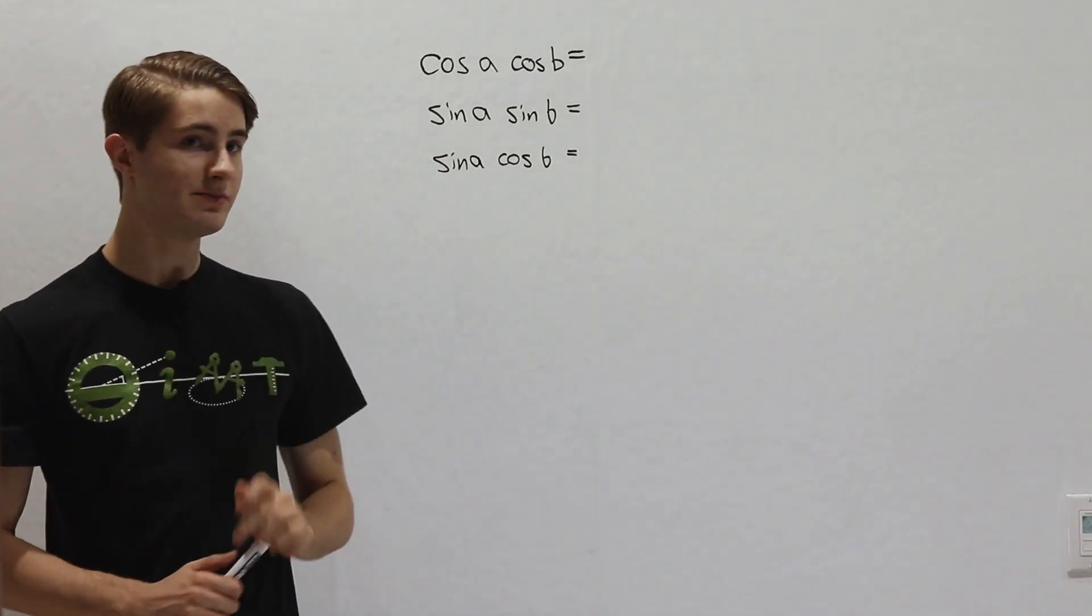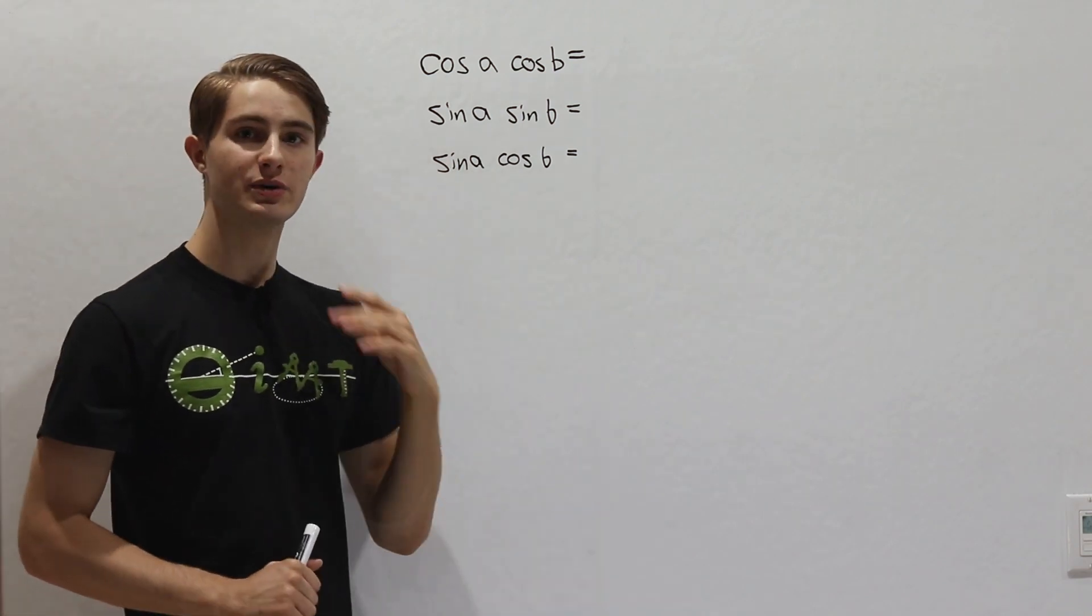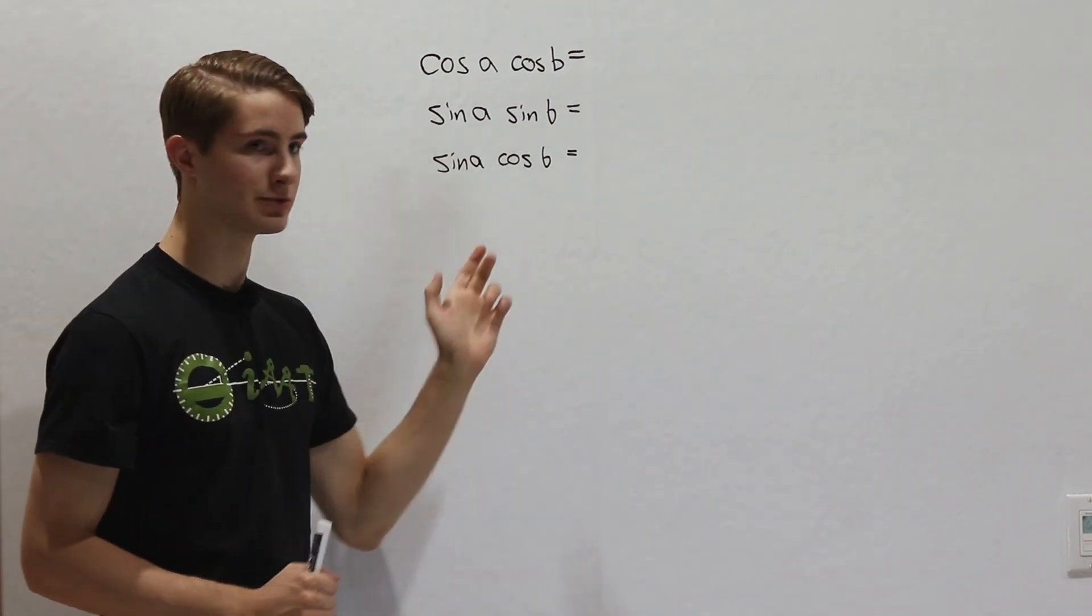So we are going to derive the product-to-sum formulas for sines and cosines, which will let us split these expressions up into a sum of two single trig functions instead of a product.